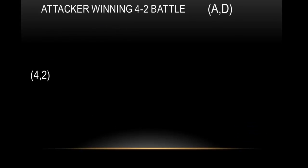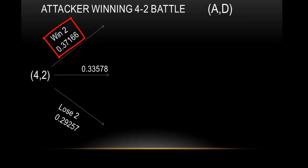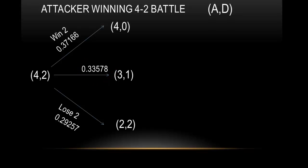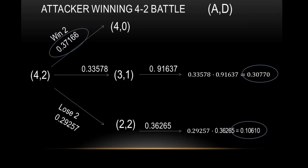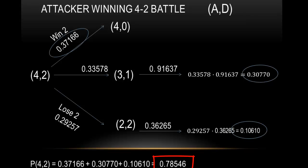A 4 on 2 battle: attacker has 4 dice, defender has 2. There are 3 different scenarios — you can win twice with that probability, you can lose twice with that probability, or you can go 1 on 1 where the attacker wins 1 and the defender wins 1. From a 2 on 2 battle we know the probability from our table: 0.36265. Multiply through those branches and we get 0.10610, about a 10% chance. A 3 on 1 battle — we know the probability, and multiplying through those branches gives 0.30770. The top branch is already done because the defender has no more dice. Add those three probabilities together and we have a final probability for a 4 on 2 battle: 0.78546.